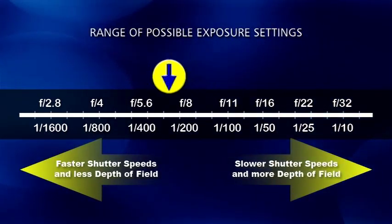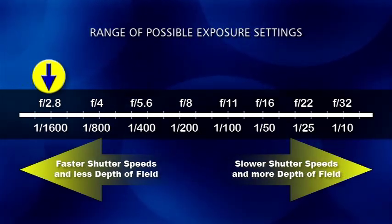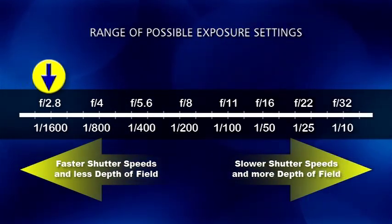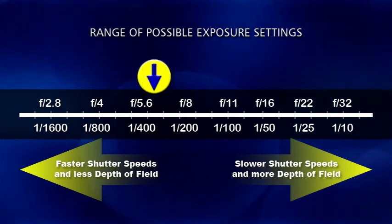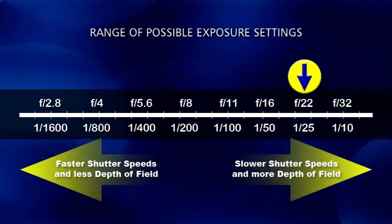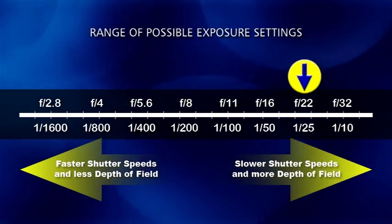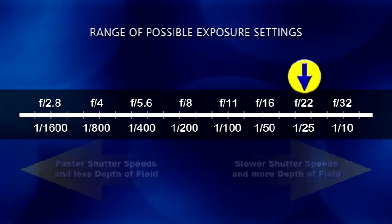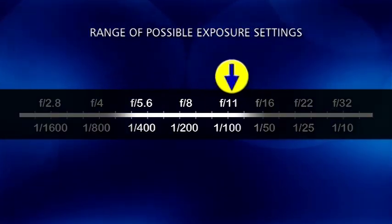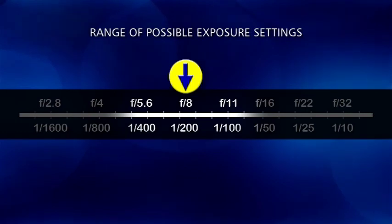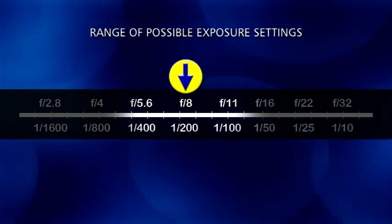I'm a big fan of using extreme exposure settings. I like very fast or very slow shutter speeds to control motion blur, or very large or very small apertures to control depth of field. That's how I think the best photos are taken. It's the middle settings — the ones the camera will choose on its own — that don't result in stunning photos nearly as often.